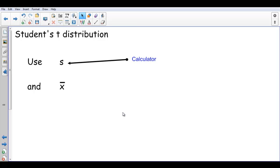And we're going to use just the mean x-bar, the mean of the sample, as the best estimate we've got of the mean of the population.